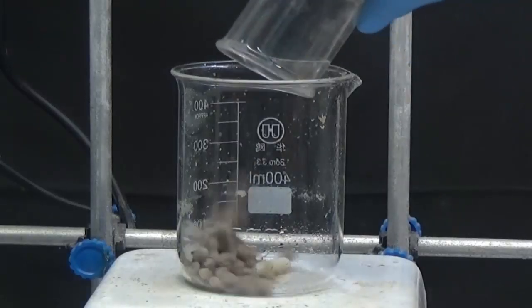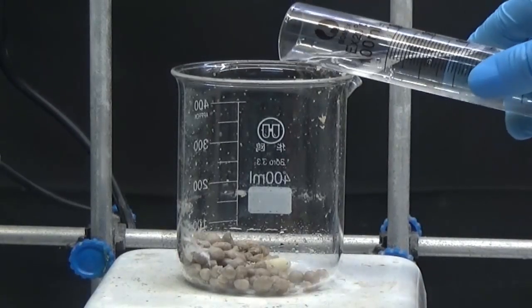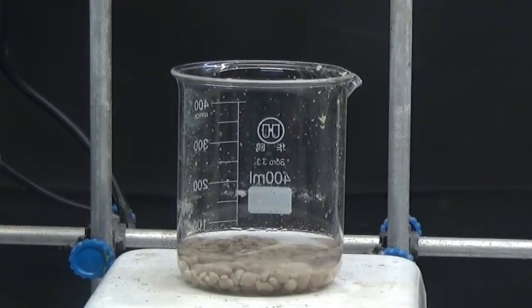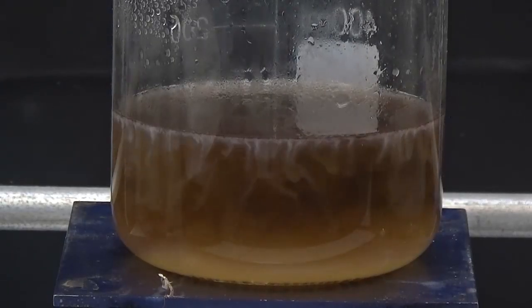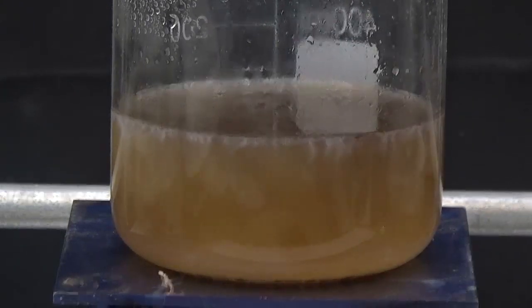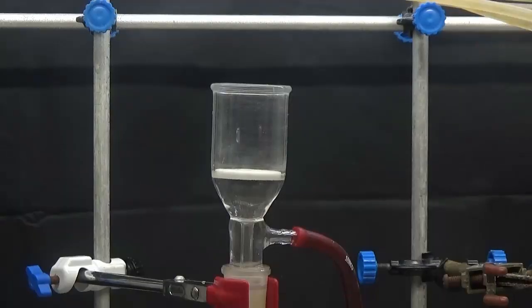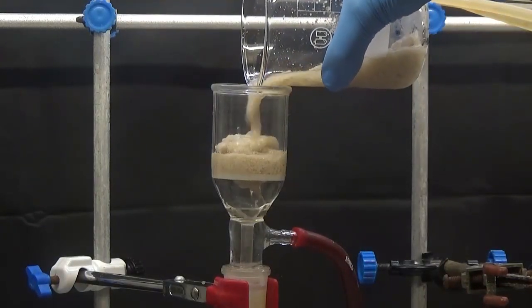To purify the obtained furfuryloxime, dilute in 100 milliliters of hot water. Leave to cool with slight stirring. Collect the crystals by suction.